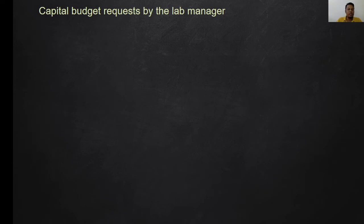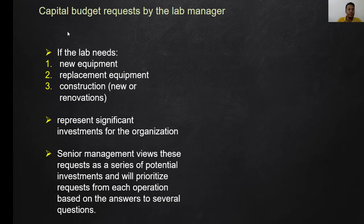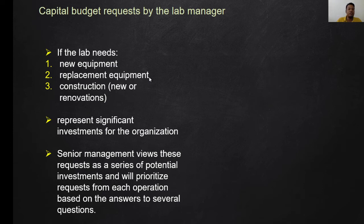Besides operations, there is also the capital budget request, which can be performed by the lab manager and is only done when it is necessary to buy an asset. If the lab needs new equipment, replacement equipment, or construction — new or innovative — for example, if the sample volume keeps increasing, a new equipment is needed to cope with the rising number of samples. Replacement may also be needed for equipment that has already broken down, such as old fridges, freezers, water baths, or to maintain or repair problems with the building or lab space.